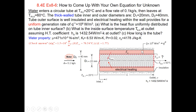The tube outer surface is well insulated, and electrical heating within the wall provides a uniform energy generation rate Q-dot, or Q-triple-prime. There is convection between the solid surface and the moving fluid. We are looking for: A, the heat flux uniformly distributed on the tube inner surface; B, the inside surface temperature TS,o at the outlet, assuming heat transfer coefficient Ho is given.